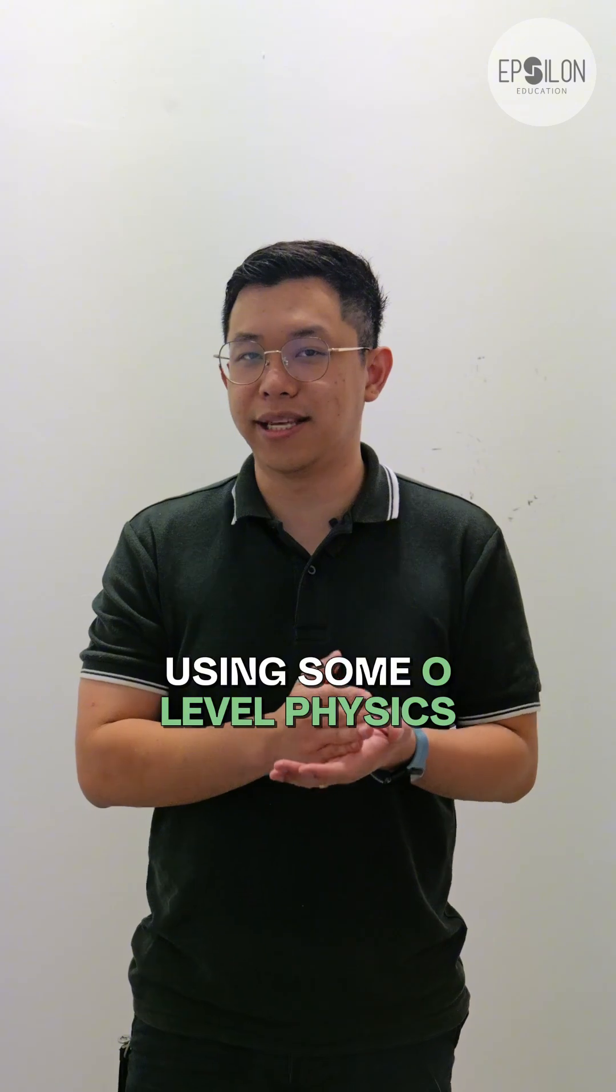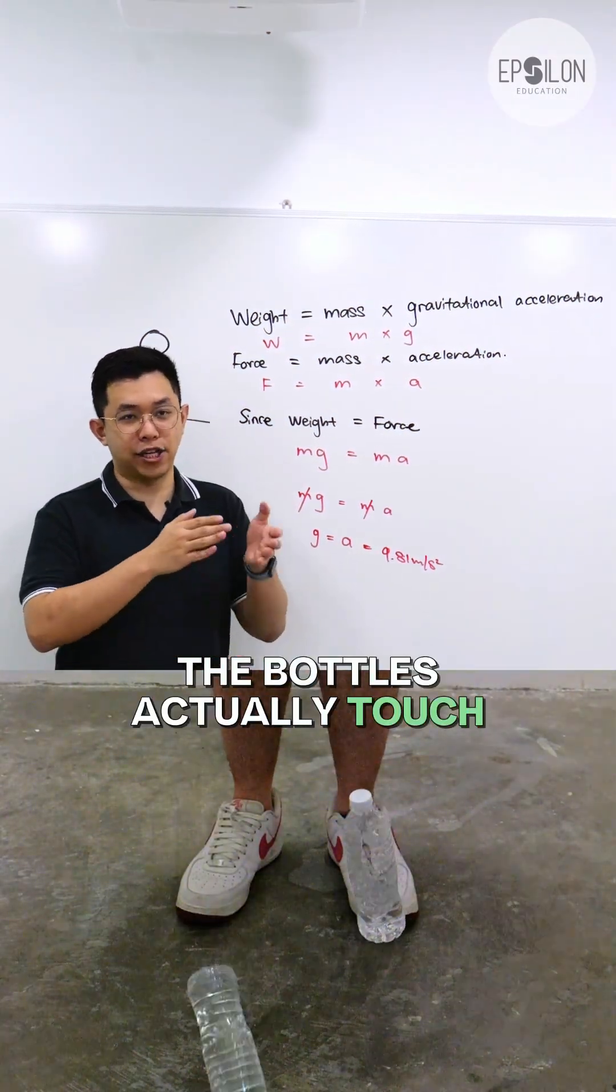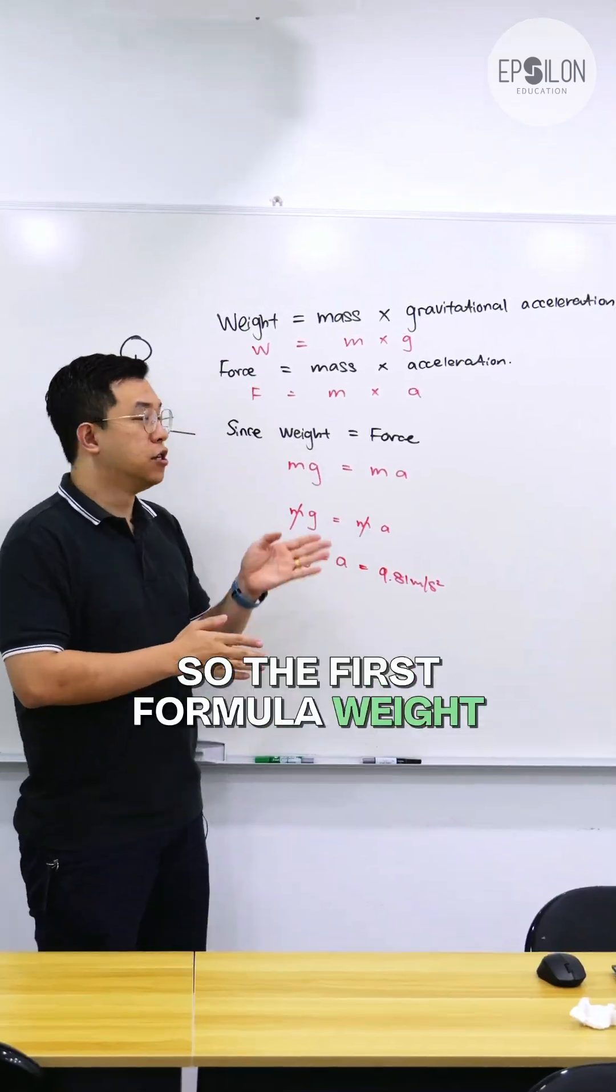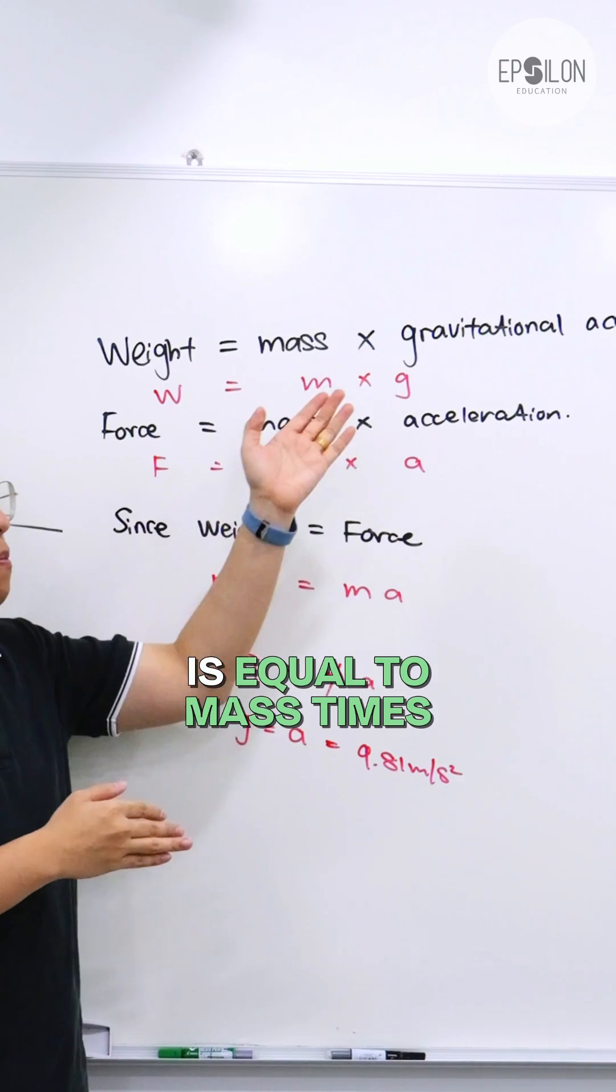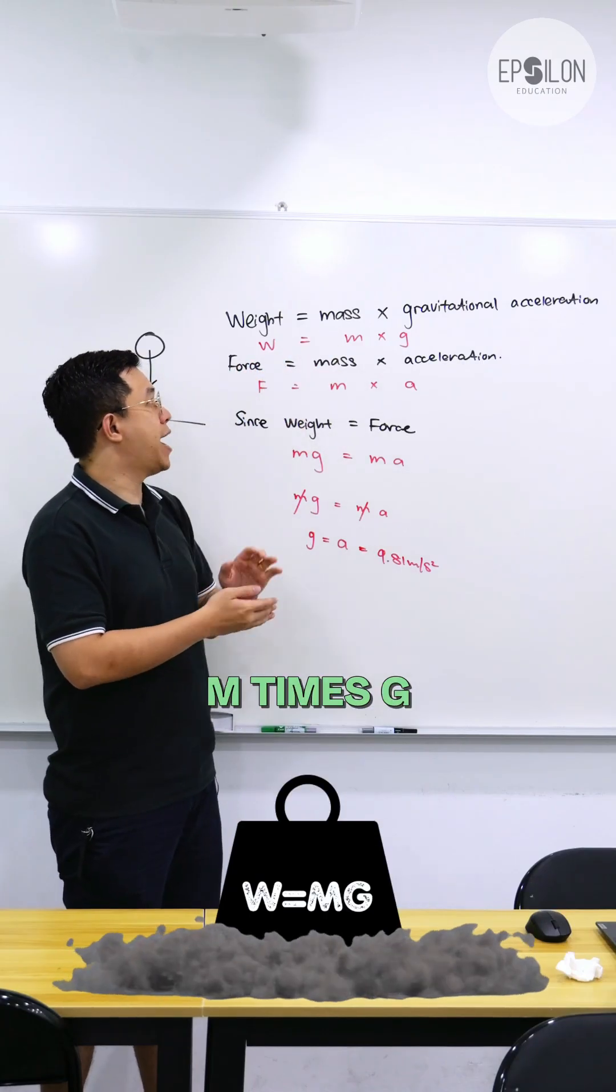Let's break this down using some O-level physics. To explain why both the bottles actually touch the ground at the same time, we need to explore two formulas. So the first formula, weight is equal to mass times gravitational acceleration. So we have W equals M times G.